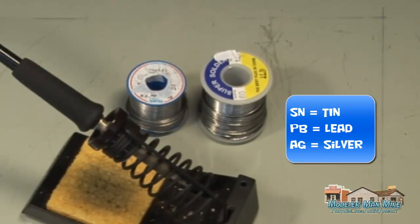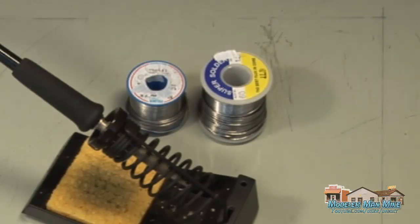For the stuff that we do, it never needs silver. It's for really high-tech surface mount, tiny stuff, government work maybe. But make sure you get the right mix of solder, 60-40.